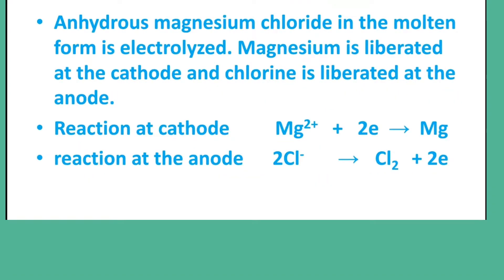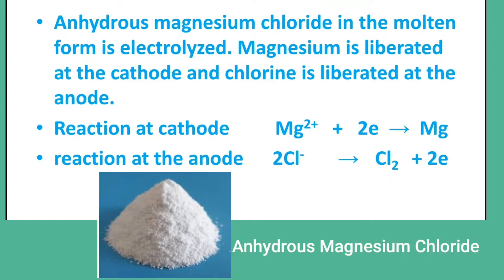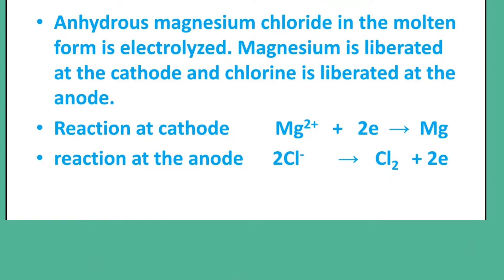Now, the magnesium chloride is in the form of molten state. In the molten state, we can see that the magnesium is going to be electrolyzed. The magnesium is going to be deposited and the chlorine gas is released.